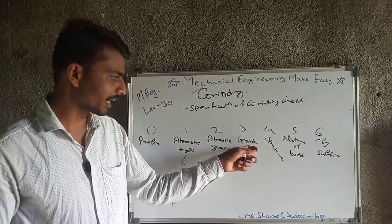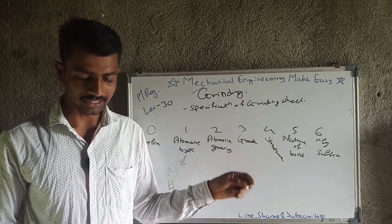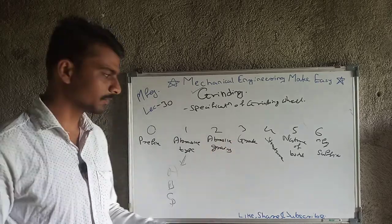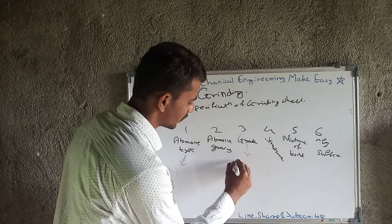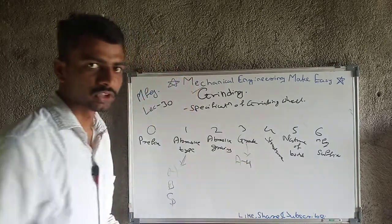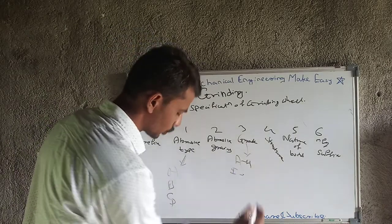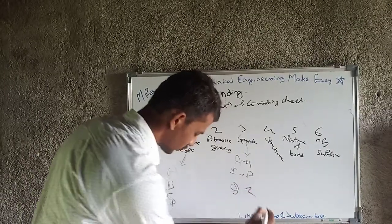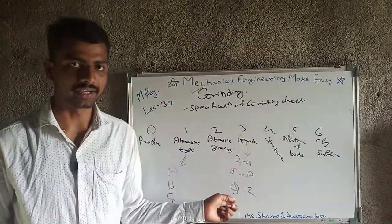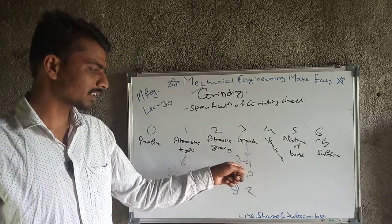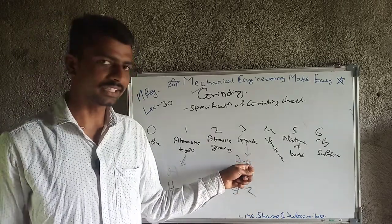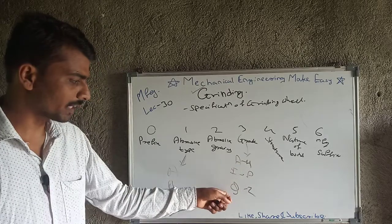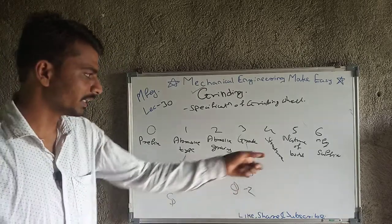Grade refers to how soft or hard the grinding wheel is, and is denoted by alphabet. A to H is soft grade, I to P is medium grade, and Q to Z is hard grade. So if the alphabet lies between A to H, the wheel has a soft grade, and so on.